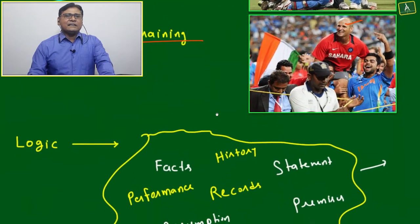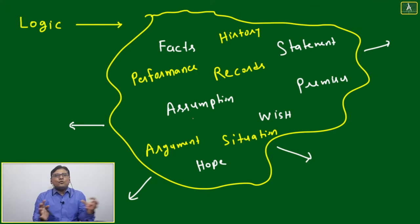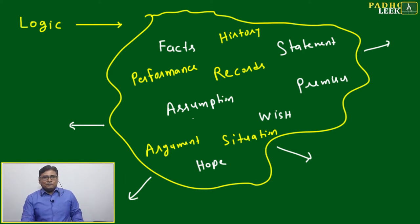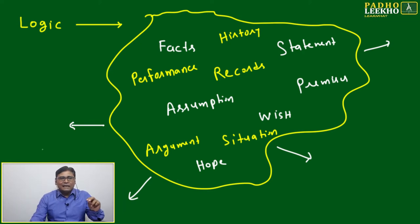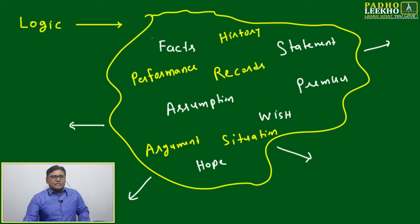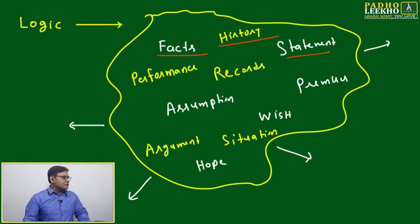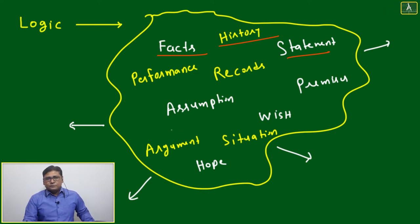Getting success in CAT is one small part. Now let's understand what logic is. Logic has such a flexible boundary that we cannot predict it 100%. The way forward is to understand the nature of that flexibility. Under logic, facts, history, statements, premises, assumptions, wishes, hopes, situations, and arguments all come together, and based on logic, many types of reasoning questions are developed for different competitive exams.